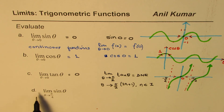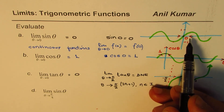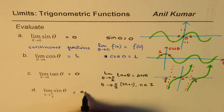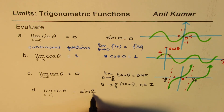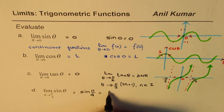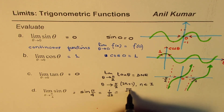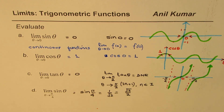Now let's find the limit of sin θ as θ approaches π/4. Since the function is continuous, we can simply substitute this value, giving us sin(π/4). And sin(π/4) equals 1 over √2, which can also be written as √2 over 2 after rationalization — both are the same.